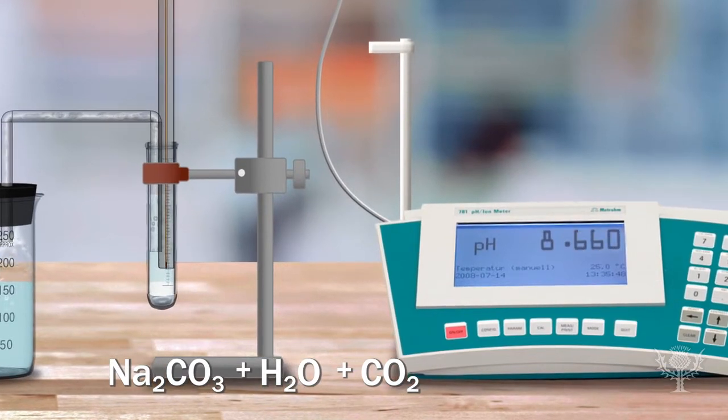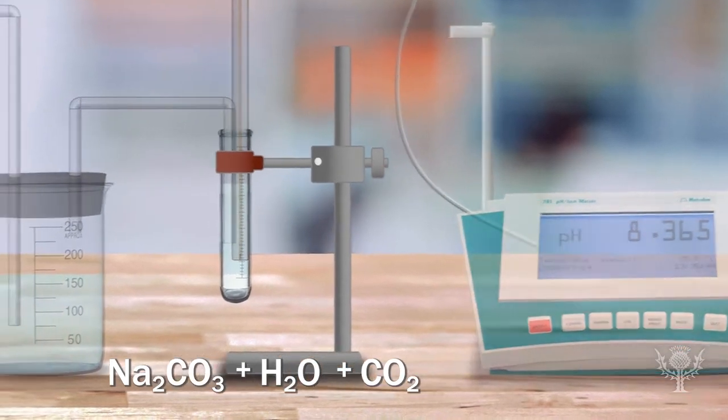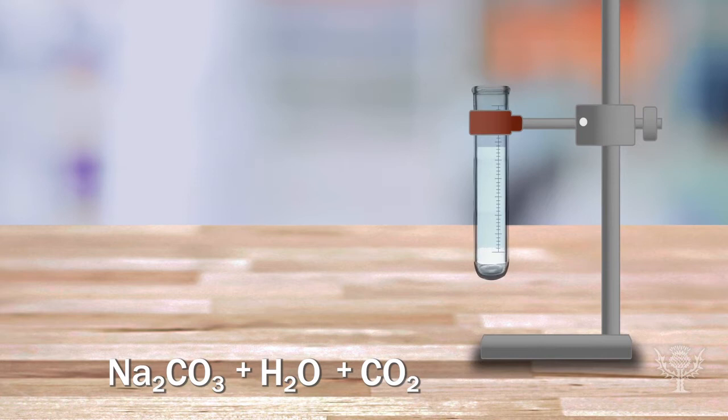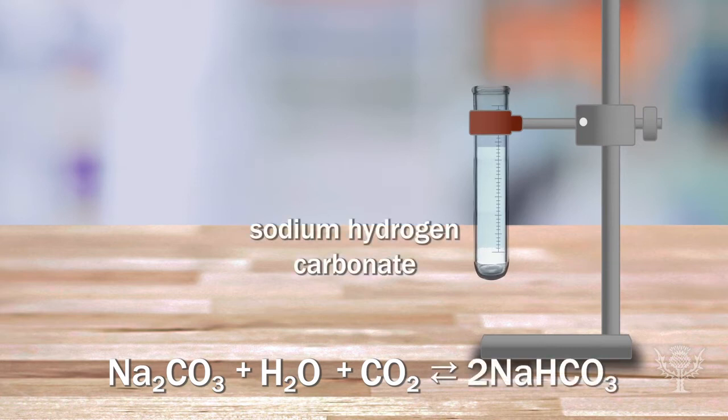Measure the solution's pH until it reaches 8.0 to 8.5. At that point, the sodium carbonate will be converted to sodium hydrogen carbonate.